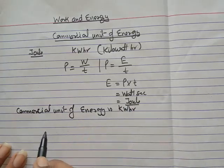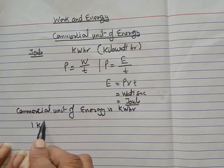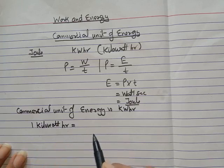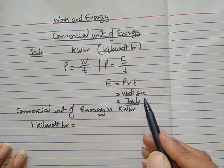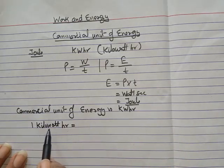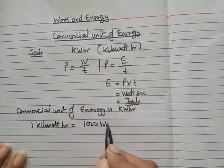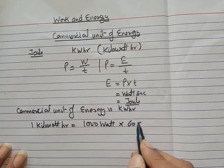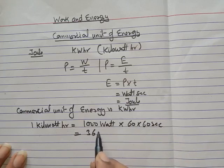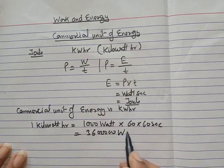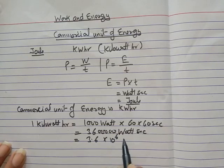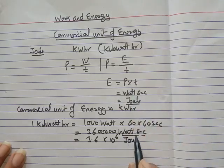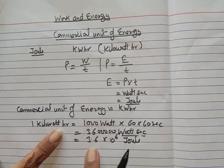Now let's write the relation between kilowatt-hour and joule. We know that one watt-second equals one joule. So one kilowatt equals 1000 watts, and one hour equals 60 × 60 = 3600 seconds. Therefore, one kilowatt-hour equals 3,600,000 watt-seconds, which in scientific notation is 3.6 × 10⁶ joules.